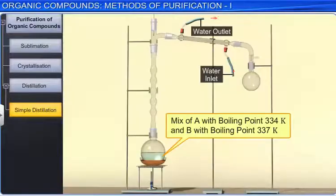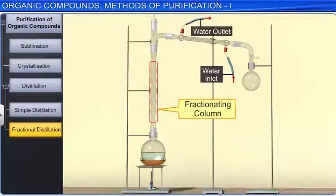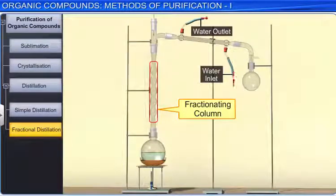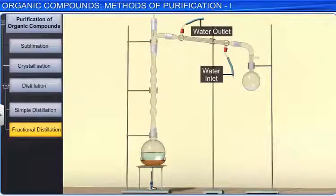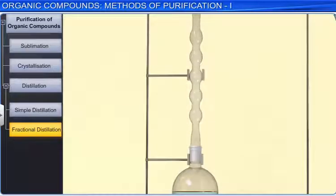Fractional distillation is used to separate liquids which have a small difference in their boiling points. In this technique, a fractionating column is fitted over the mouth of the round bottom flask. The purpose of the fractionating column is to increase the area of the cooling surface and to provide hurdles to the ascending vapors. The vapors of a liquid mixture are passed through this column before condensation. As the liquid boils, the more volatile component rises to the top. Some of the condensing liquid obtains heat from the ascending vapors and gets vaporized again, becoming richer in the low boiling component.